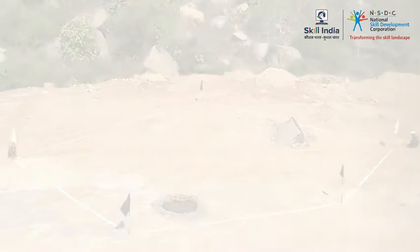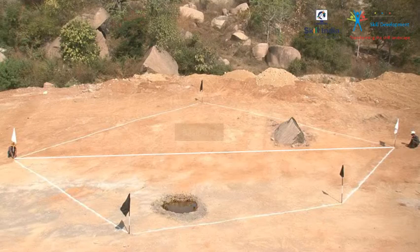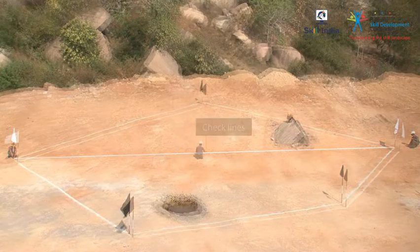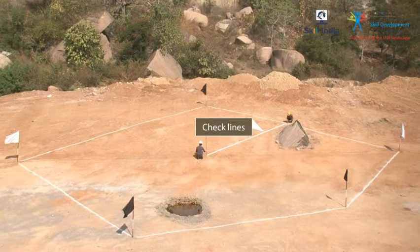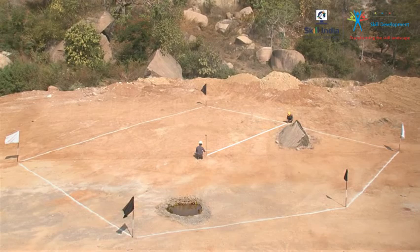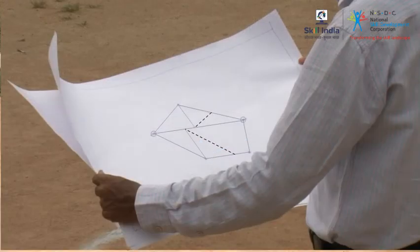So, remember, the baseline and the checklines are the important survey lines while taking offsets. You can use the cross staff to take the perpendicular offset and the chain to take the oblique offset.